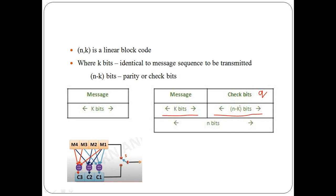The message bits are arranged as k message bits on the left-hand side, and the check bits on the right-hand side. We give the check bits the notation q, where q equals n minus k — total block size minus message bits gives the check bits. So the notation of the linear block code is n comma k. The check bits are generated from the message bits: for example, with four message bits m1, m2, m3, m4, doing XOR of m1, m2, m3 produces c1.